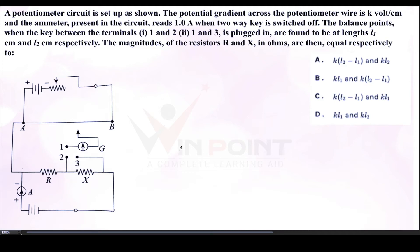A potentiometer circuit is set up as shown. The potential gradient across the potentiometer wire is k V per centimeter, and the ammeter present in the circuit reads 1 Ampere when the two-way key is switched off. The balance points when the key between terminals 1 and 2, and then 1 and 3, are plugged in are found to be lengths L1 and L2 centimeters respectively. Find the magnitude of resistors R and X in ohms.